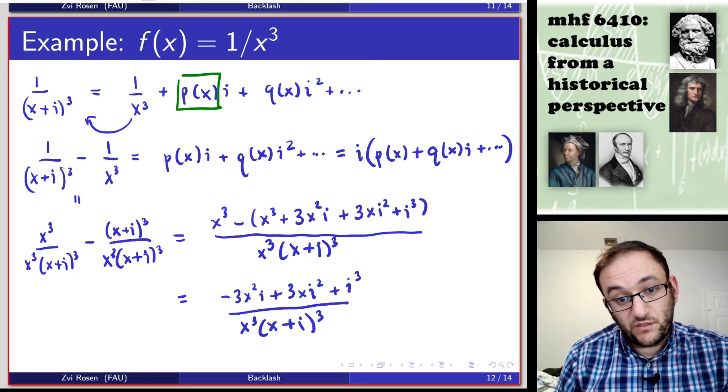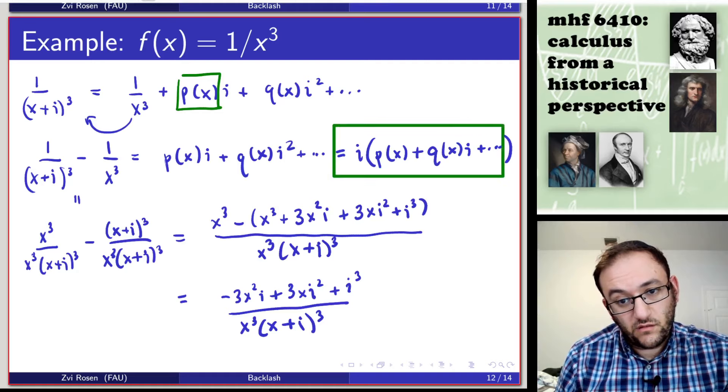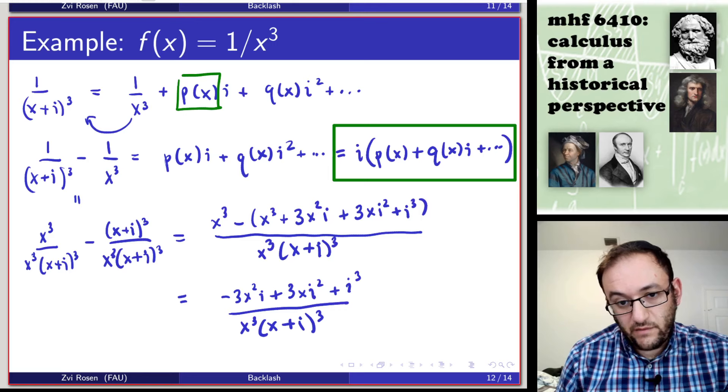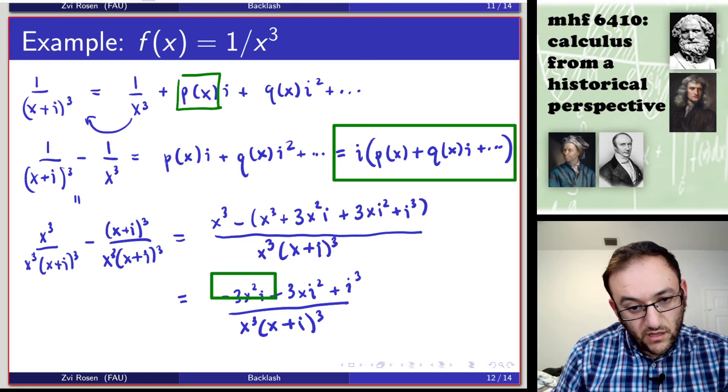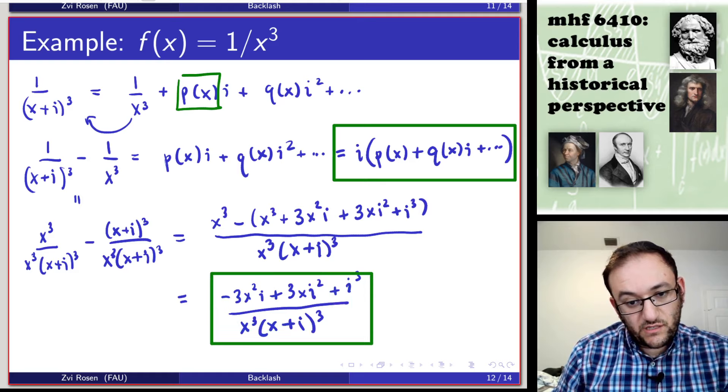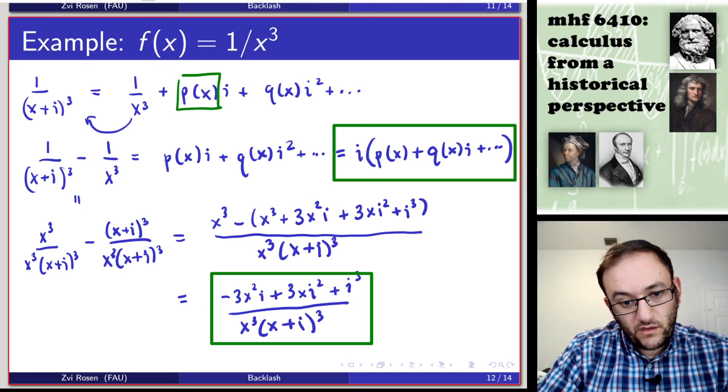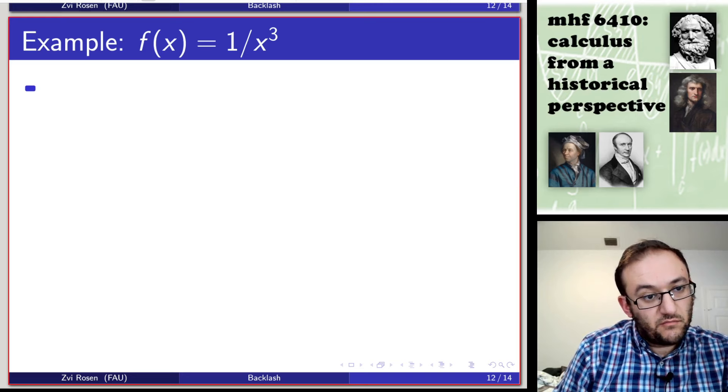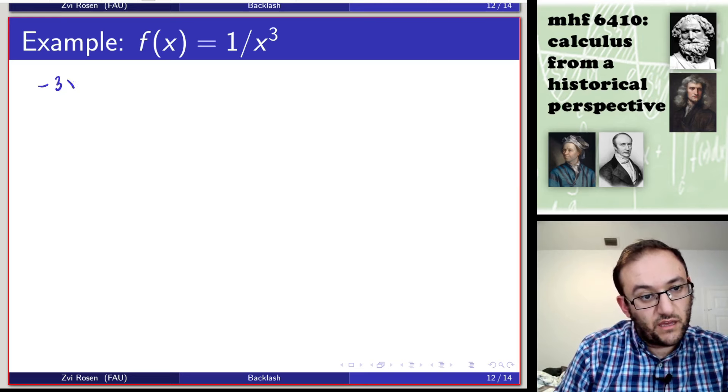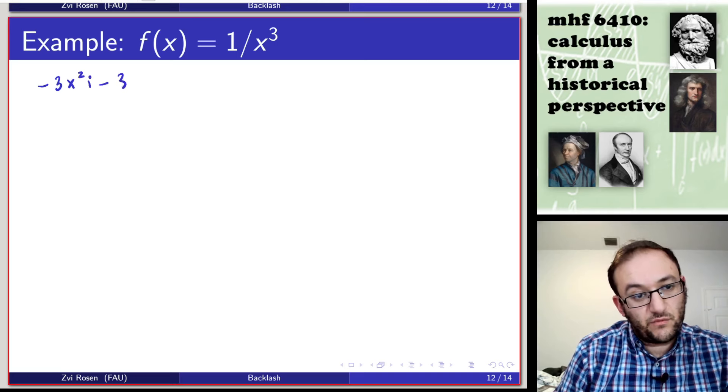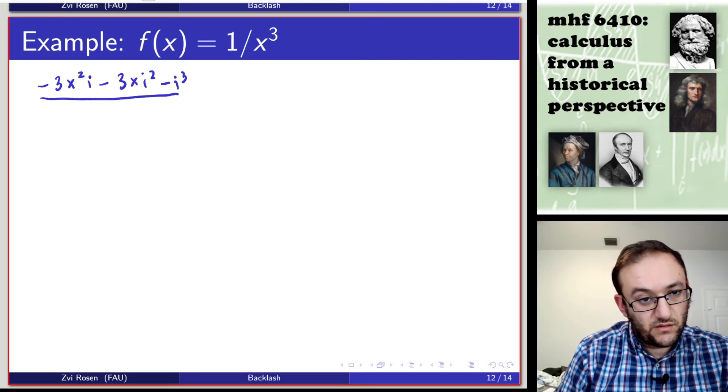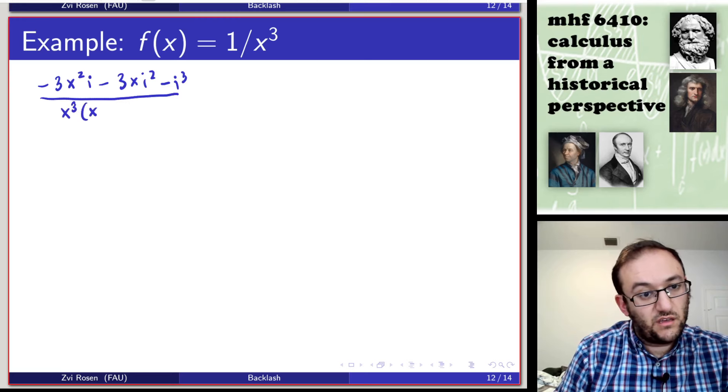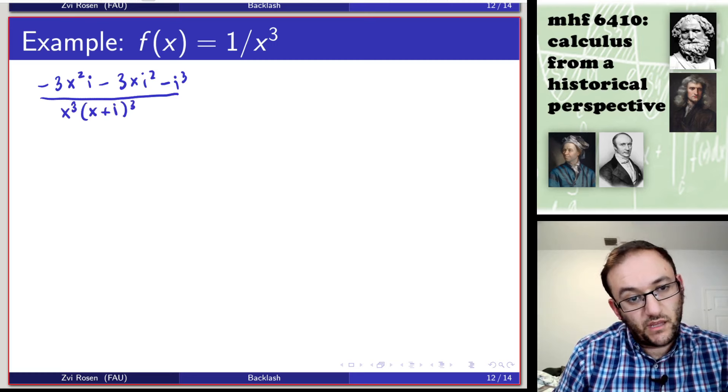The next step will be to set the following to be equal. This expression from the right-hand side of the equation, and this expression which was on the left-hand side of the equation. So taking those we'll get minus 3x squared i minus 3xi squared minus i cubed, divided by x cubed, x plus i cubed. And that's equal to i times p of x, plus i q of x.